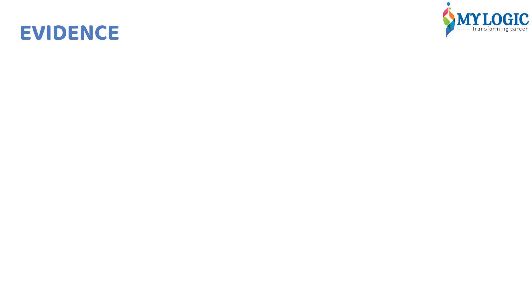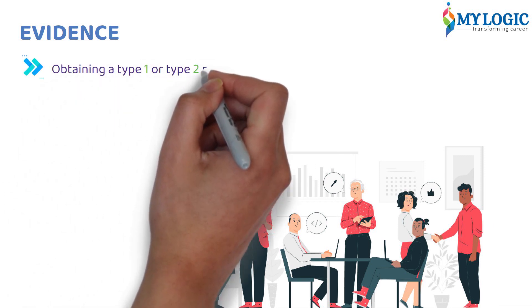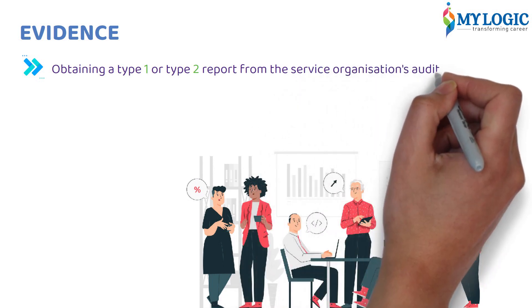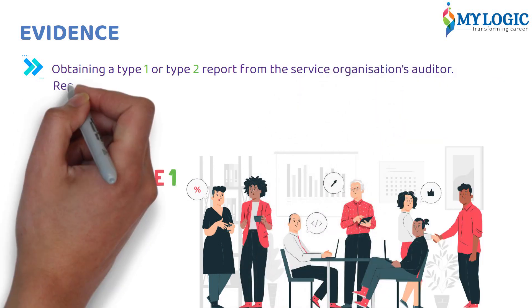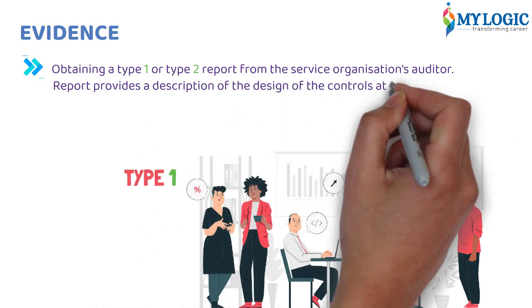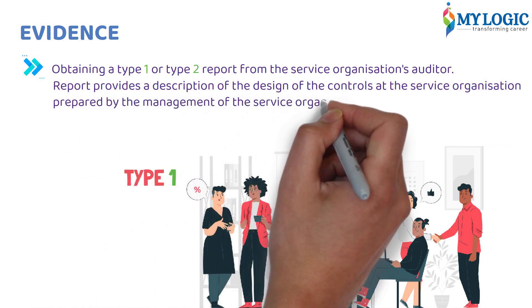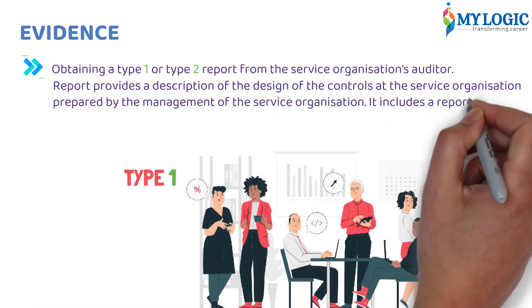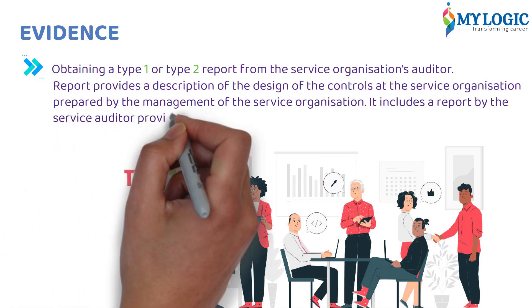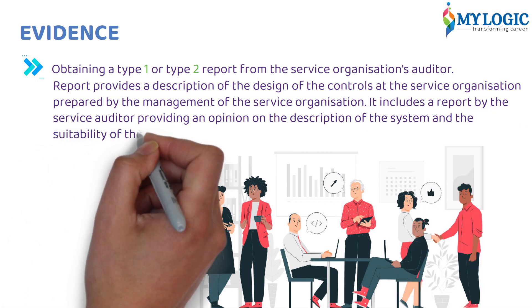Evidence: Sources of Information About the Service Organization. Obtaining a Type 1 or Type 2 Report from the Service Organization's Auditor. A Type 1 report provides a description of the design of the controls at the service organization prepared by the management of the service organization. It includes a report by the service auditor providing an opinion on the description of the system and the suitability of the controls.